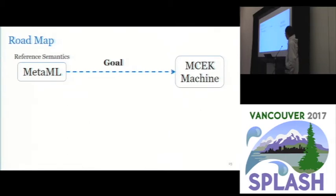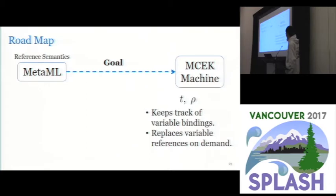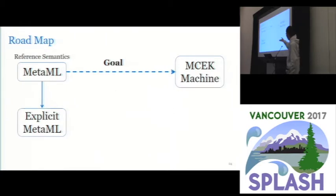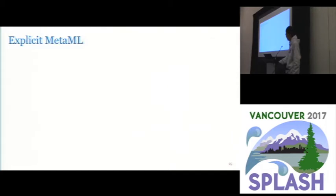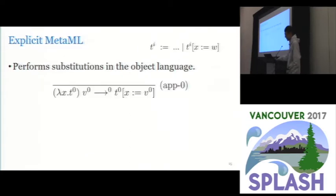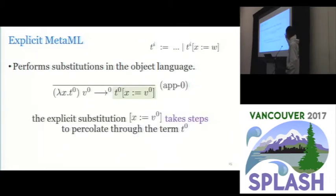So what we are heading to is an MCEK machine, which is an environmental semantics which keeps tracks of variable bindings and replaces variable references on demand. And what we currently have is a substitutional semantics. So in order to bridge the gap between these two kinds of semantics, we introduce explicit MetaML. So explicit MetaML performs substitutions in the object language and it internalizes explicit substitutions. And an explicit substitution takes steps to percolate through the term.